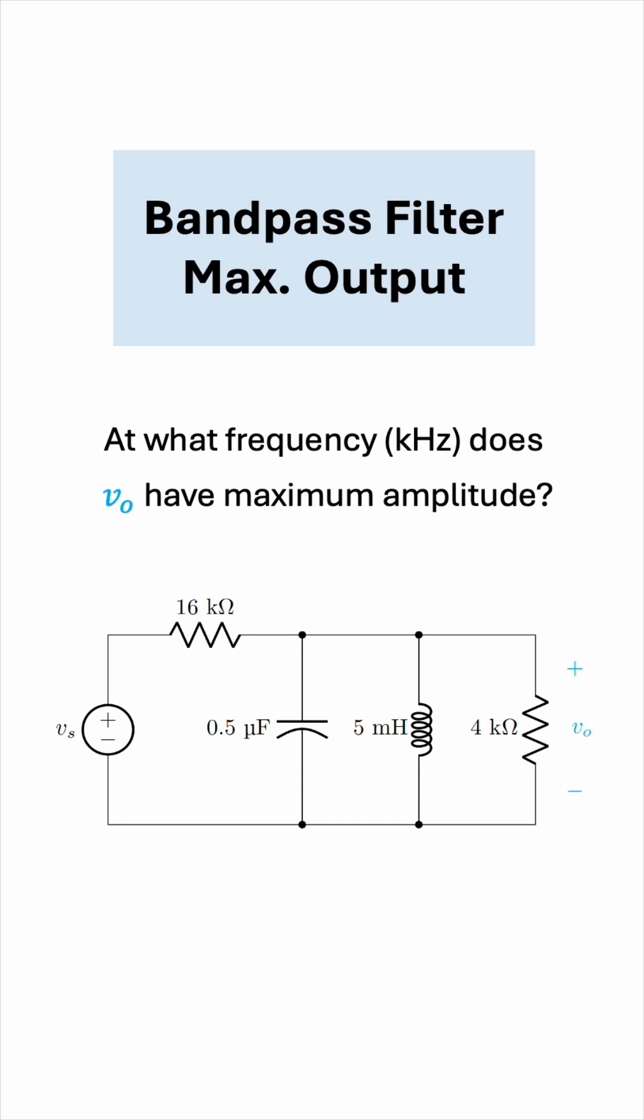This is an RLC bandpass filter. If the source voltage Vs has a constant amplitude but can be varied over a broad range of frequencies, then at which kHz frequency does the output voltage have maximum amplitude? Let's solve this problem together.